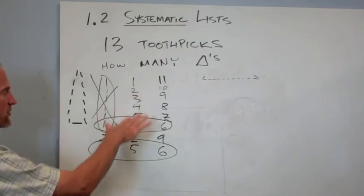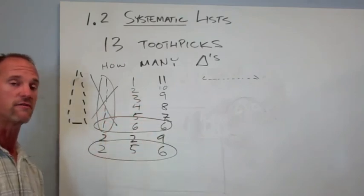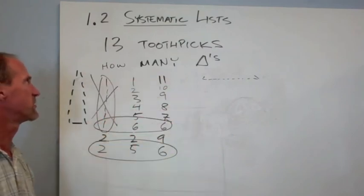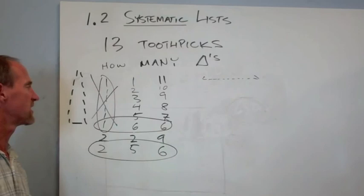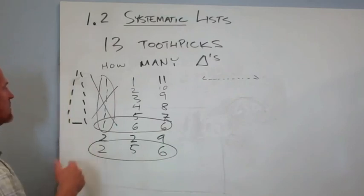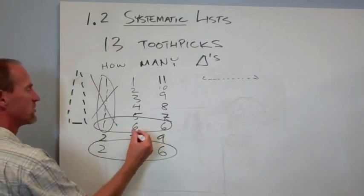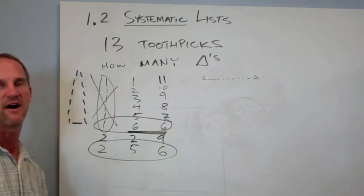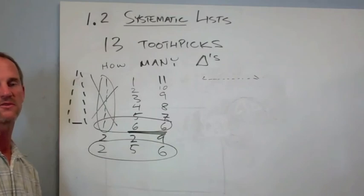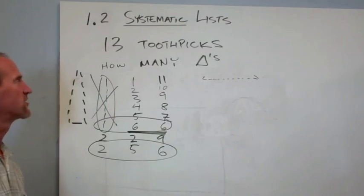See if you can complete this systematic list and find all of the triangles that have 13 toothpicks. Once you've done that, see how many of them are isosceles. Isosceles are triangles like this where you've got two equal sides. I'll give you a hint. Half of them that you'll find are isosceles out of the total. So, maybe that'll help you check your work. Good luck with that.